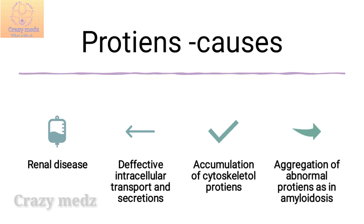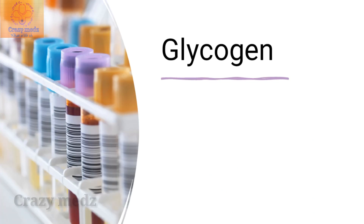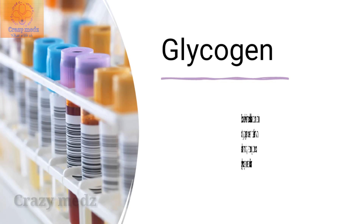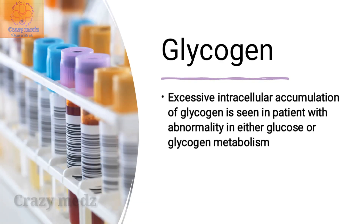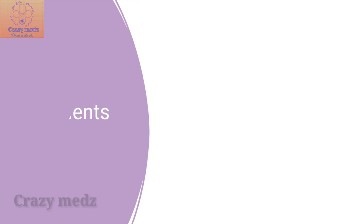Glycogen: excessive intracellular accumulation of glycogen is seen in patients with abnormality in either glucose metabolism, as in diabetes mellitus, or glycogen metabolism due to an enzymatic defect in either synthesis or breakdown of glycogen.